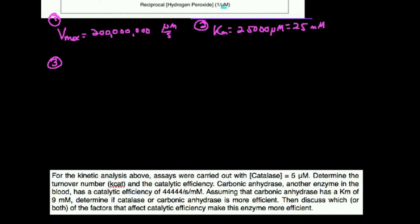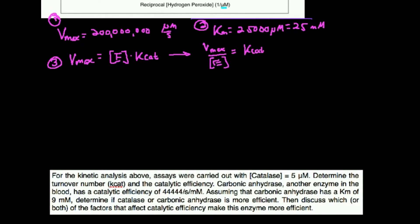In general, the formula is: Vmax equals the total concentration of the enzyme used times the Kcat. If I want to rearrange this to find Kcat, I divide both sides by the enzyme concentration. So if I take the Vmax and divide by the concentration of the enzyme — in this case catalase — that's going to give me the Kcat. Now the stipulation: if I look at the units of Vmax, I have micromolar per second.